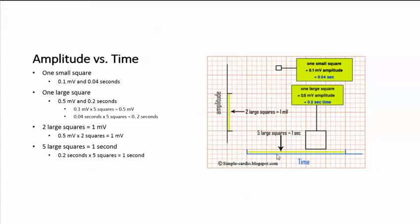And 5 large squares equals 1 second. 0.2 seconds in a large square times 5 squares equals 1 second.